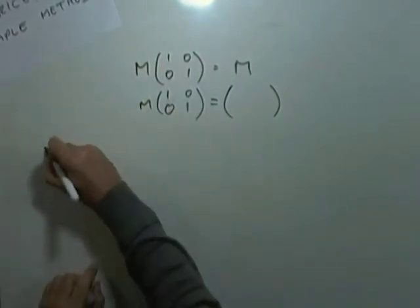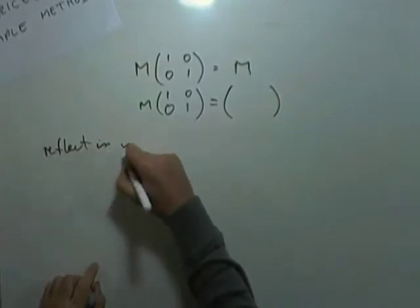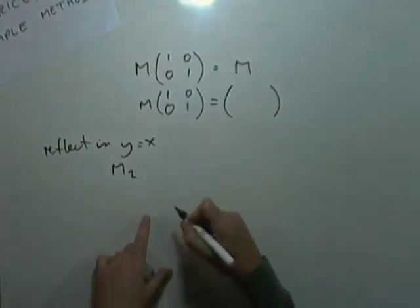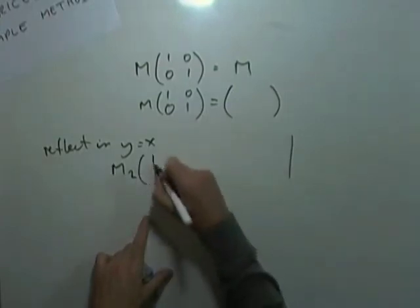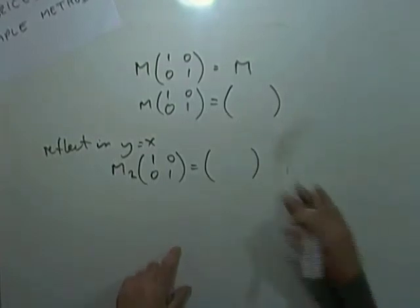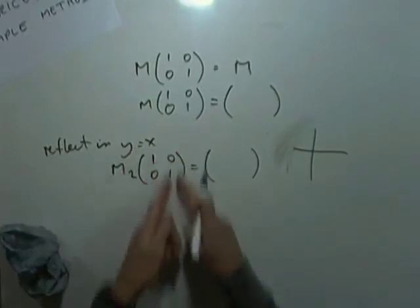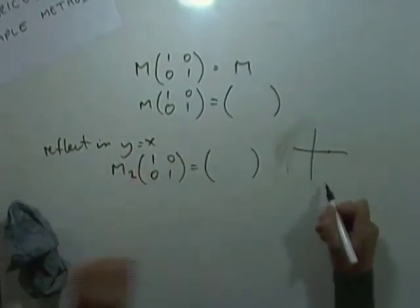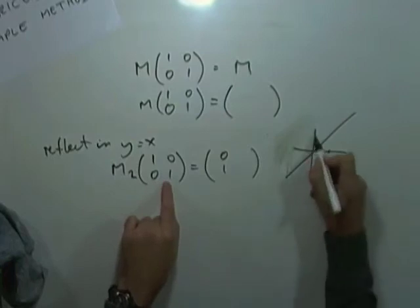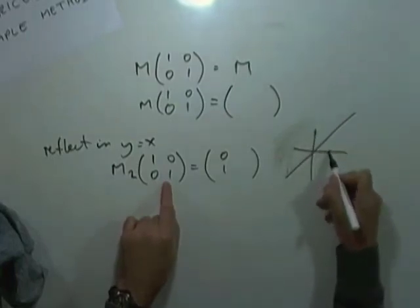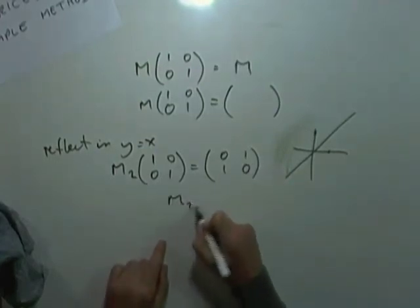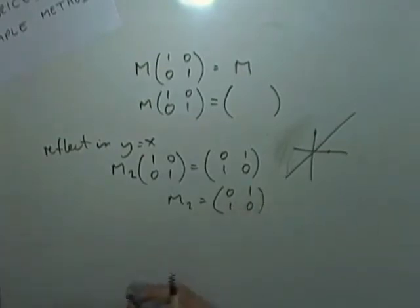What about reflect in the line y equals x? Call that m2. What's the matrix associated with reflecting in the line y equals x? Well, if you multiply it by the identity element, whatever you end up with will be the matrix itself. So considering the identity element as two points to be transformed, you've got the point one zero, which if you reflect it in the line y equals x will go to zero one. Which means m2 equals this. So m2 equals zero one, one zero. Another one.